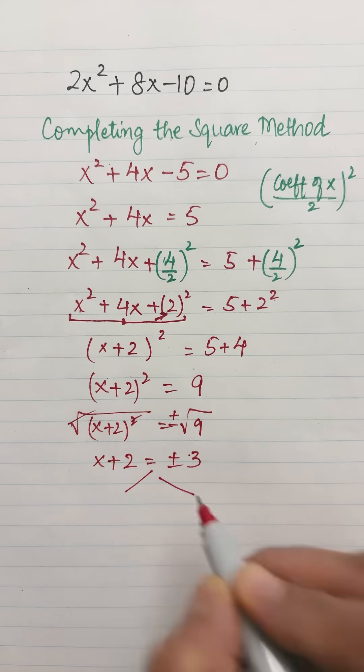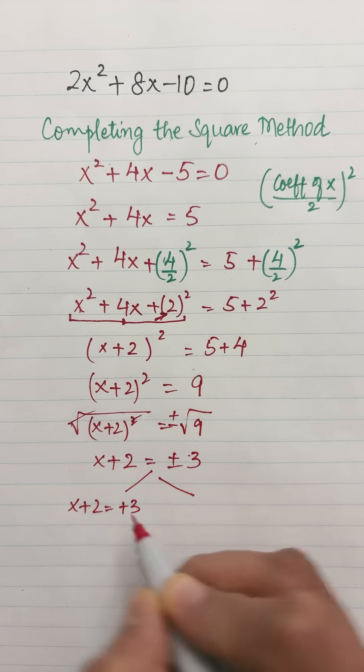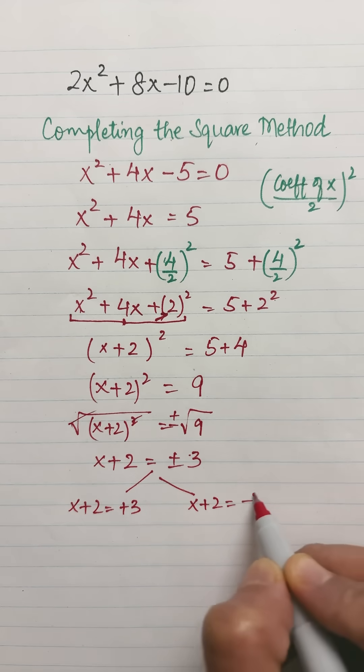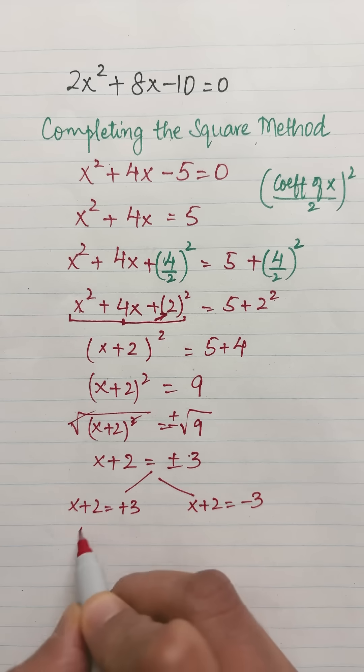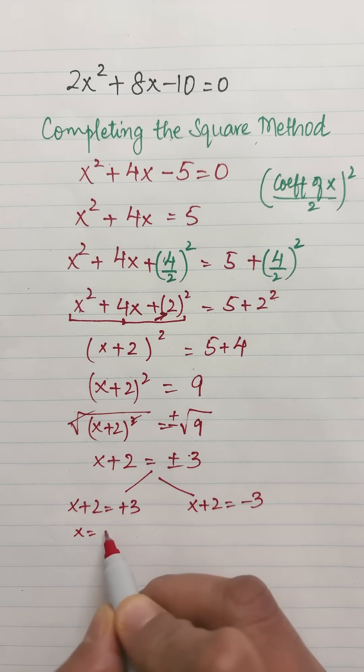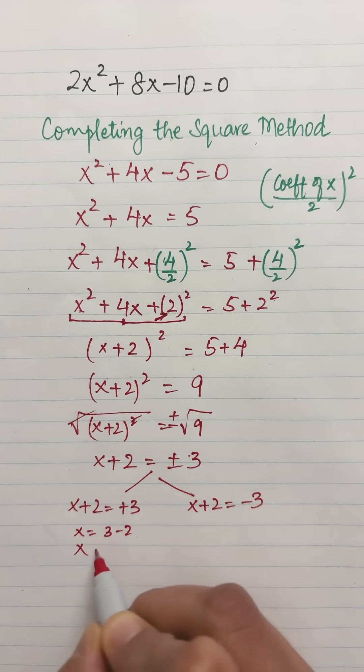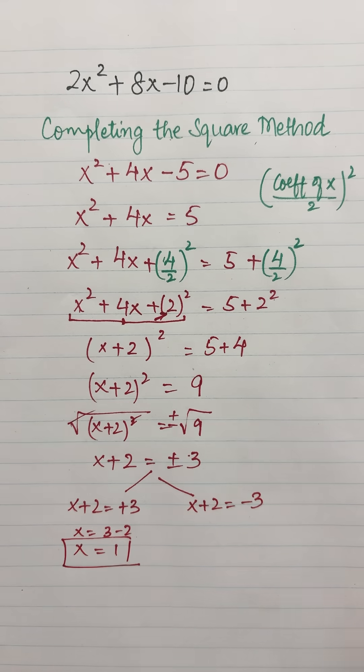Now this will give me two equations. x + 2 = +3, x + 2 = -3. So let's solve this. The 2 shifted to that side will become minus. So x = 1. This is one of the solutions.